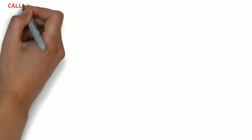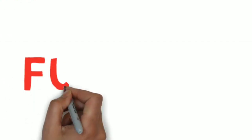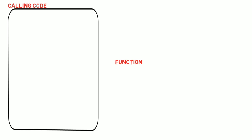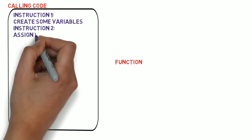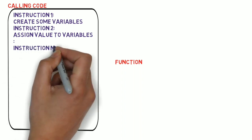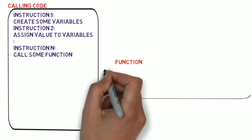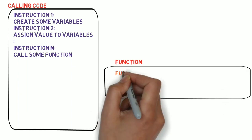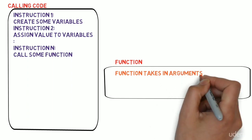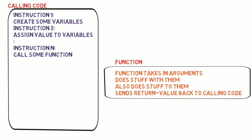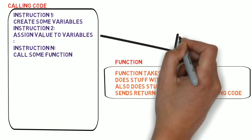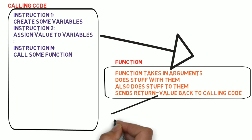Let's understand this in a little more detail. You have some calling code and you have a function. The calling code will be a set of instructions, like creating a variable or assigning a variable, and at some point in the calling code you would call a function. The function takes in an argument which the calling code passes it, does some stuff with it and sends a return value back to the calling code.